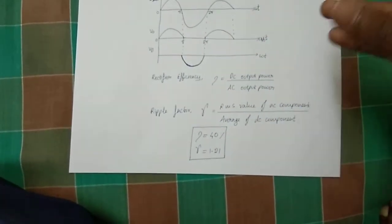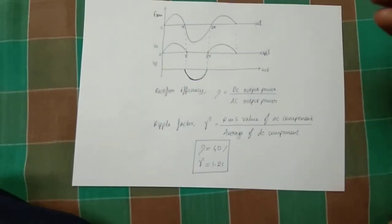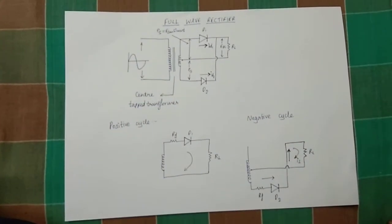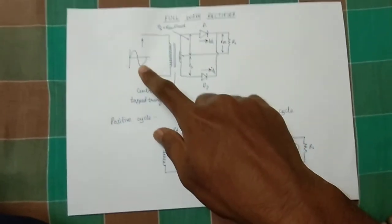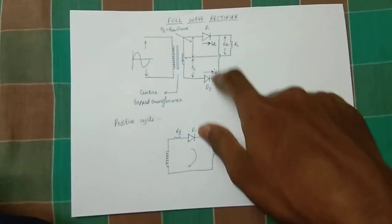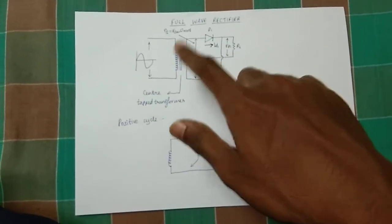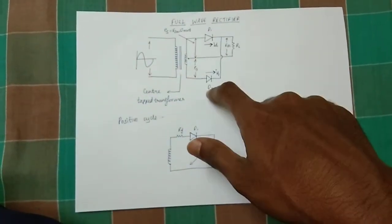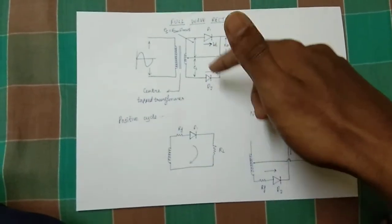The full-wave rectifier is a good advantage. The full-wave rectifier — the second one is a center-tap transformer, so we can remove the filter from the capacitor. The second component is a diode.